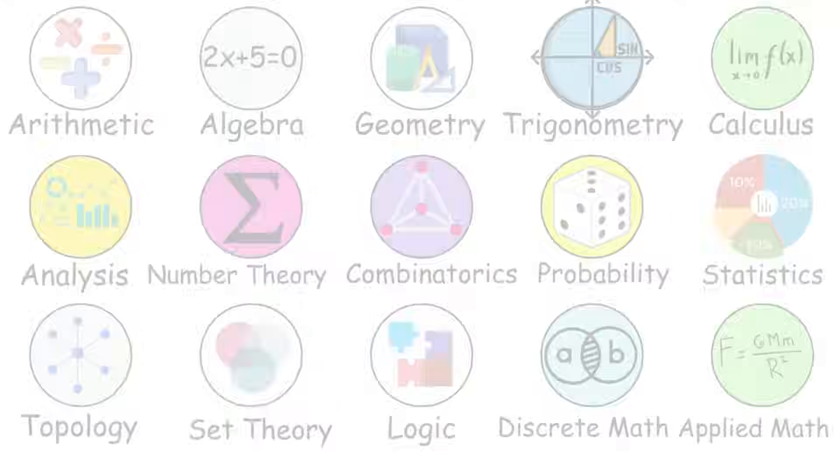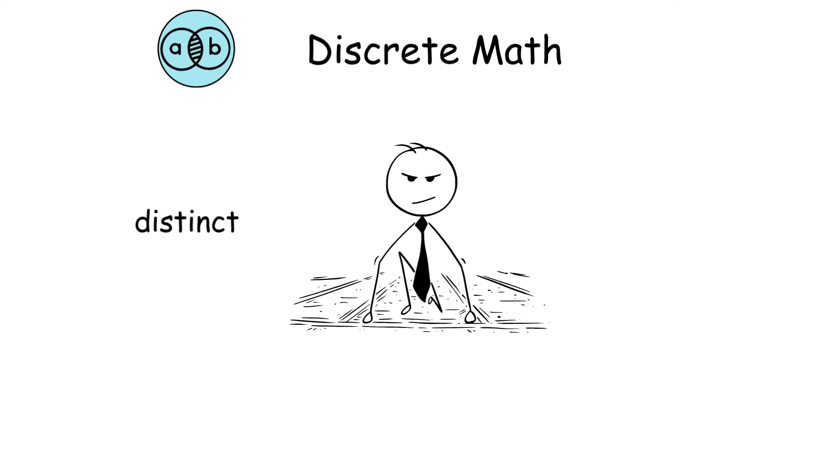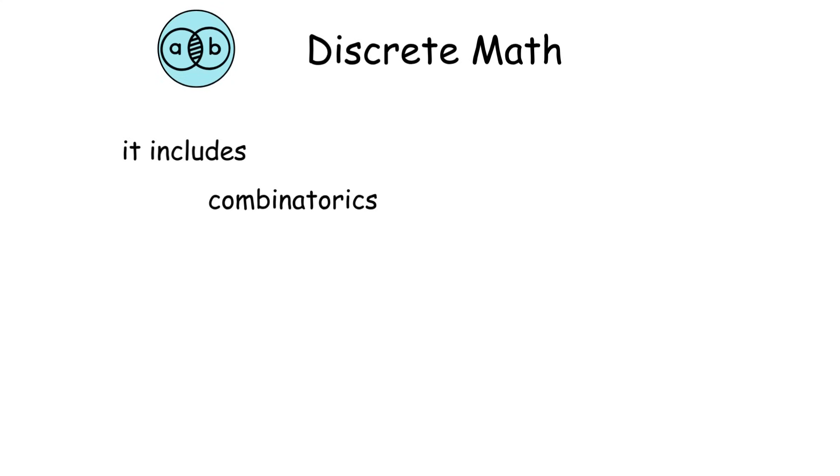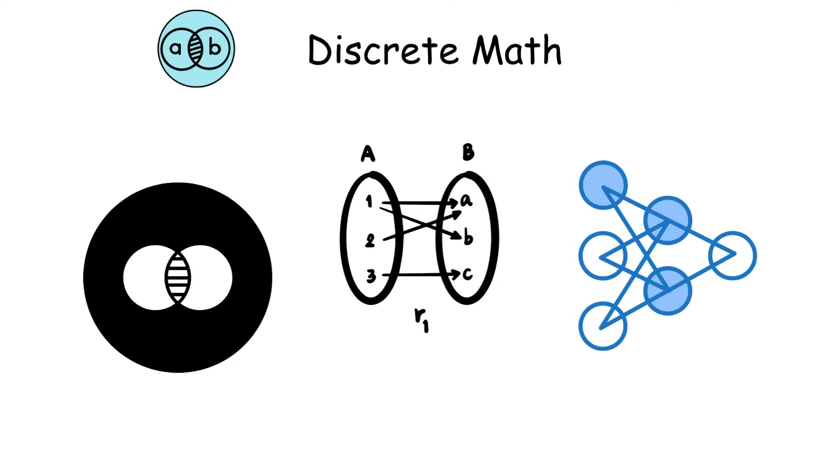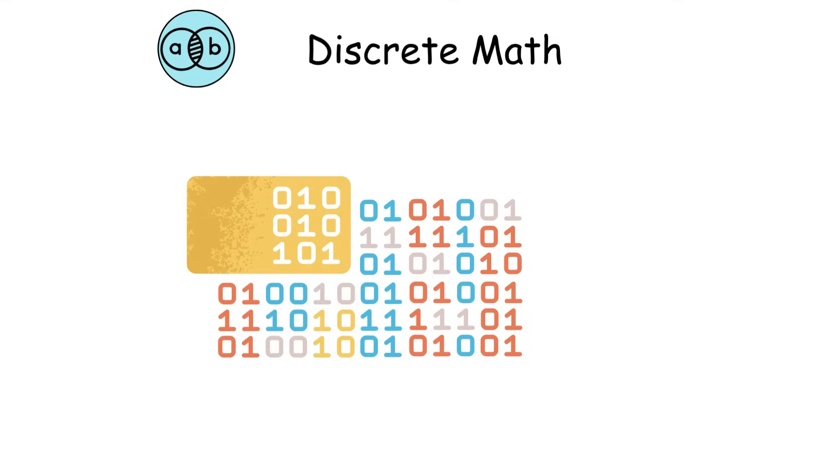Discrete mathematics. Discrete mathematics focuses on distinct, countable structures, unlike continuous ones. It includes combinatorics, graph theory, and logic, studying sets, relations, and algorithms. Basic concepts, like binary trees, organize data efficiently.